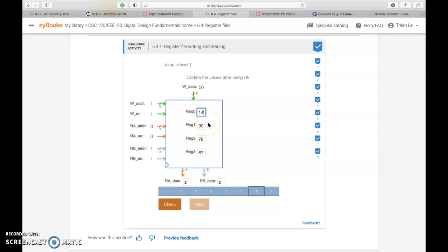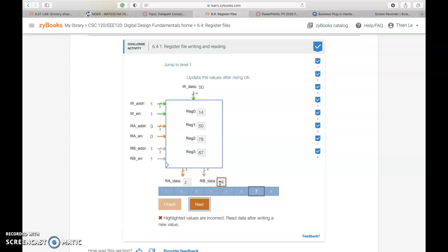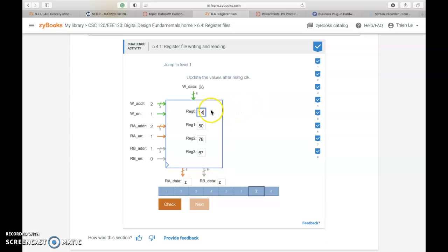For the W N and the RB N being enabled, we're looking for changes at W which is data 50, and we're looking at the change for register 1 which is 50. So instead of 90 we write 50 for this. And then for the next one is the RB which is register 1, so that's 14 for that. So that's 14. Oh oops, sorry, it should be 50.